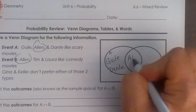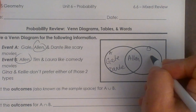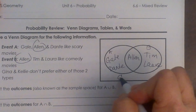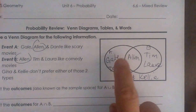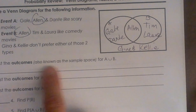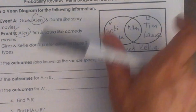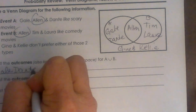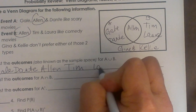Alan is in circle A, but he's also going to be in circle B. Over here in circle B I have Tim and Laura. Gina and Kelly are outside both circles because they don't like scary movies or comedies. List the outcomes — also known as sample space — for A union B. That would be Gail, Dante, Alan, Tim, and Laura. That's the union.